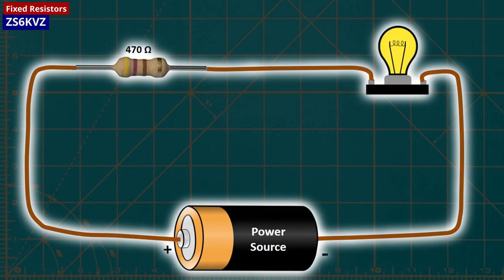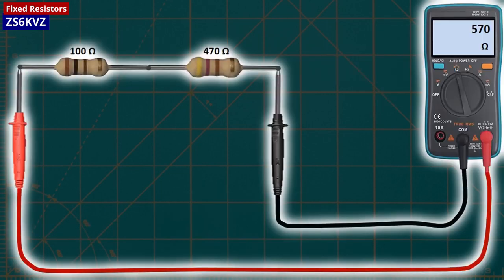To achieve higher resistances, we can connect resistors in series because, in series connections, the equivalent resistance is equal to the total value of resistors. For instance, if we connect two resistors of 100 ohms and 470 ohms in series and measure the total resistance using a multimeter, we obtain a total value of 570 ohms.